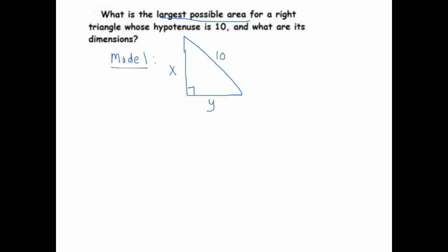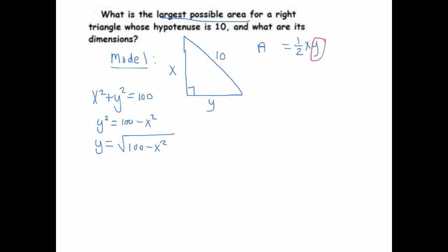Our area function is A = ½xy. That's in terms of two variables, and we'd like it in terms of one. Since this is a right triangle, the other relationship is the Pythagorean theorem: x² + y² = 100. Solving for y gives y = √(100 − x²) — no negative square root since we're talking about side lengths. So A(x) = ½x · √(100 − x²).